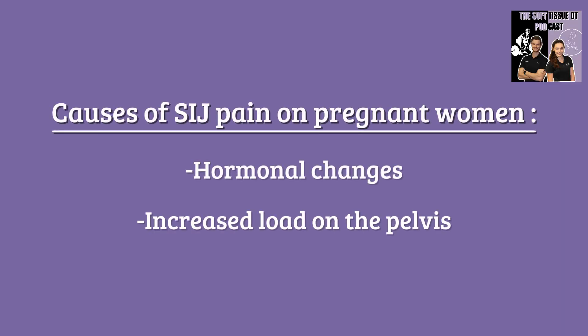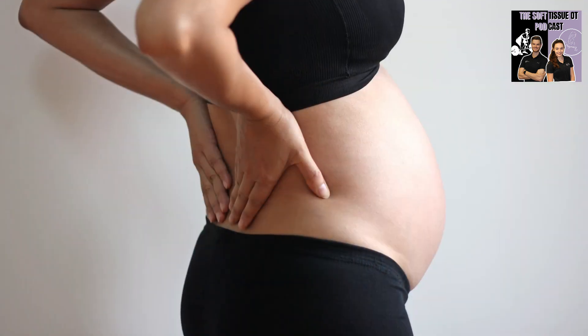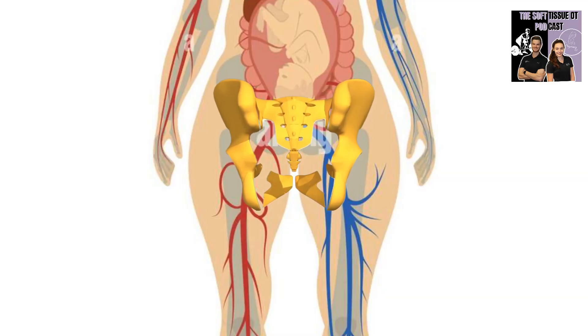As the baby grows, the pelvis must support additional weight, altering force distribution across the lower back and SIJ. Postural changes also occur: carrying more weight in front causes a backward lean to counteract that force, creating an exaggerated lumbar lordosis. That extra weight plus the change in postural position puts more stress through the sacrum and SIJ. It's almost a catch-22 — you need more stability, but the hormones are reducing it.